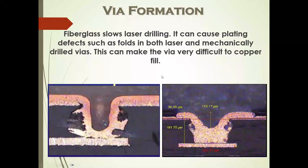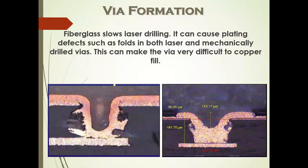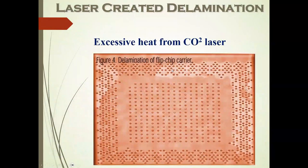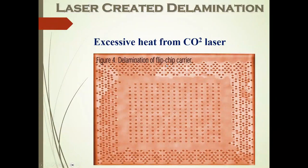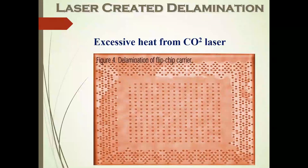One of the big problems is the use of fiberglass. Fiberglass slows laser drilling and it can cause a lot of plating defects that you don't necessarily have with mechanical drilling, and it can make the vias very difficult to fill. If your fabricator is using a CO2 laser, you have to specify energy, pulse length, rep rate, and programming location.